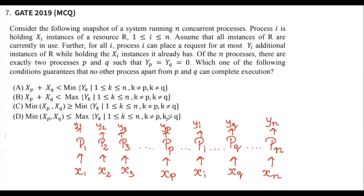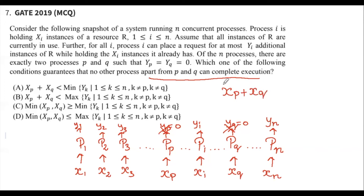Since YP and YQ are zero, P and Q are not requesting any resources. After processes P and Q complete execution, they release their resources, making XP plus XQ available. This available resource must be strictly less than the minimum of the resources required by the remaining processes — only then can no other process execute.